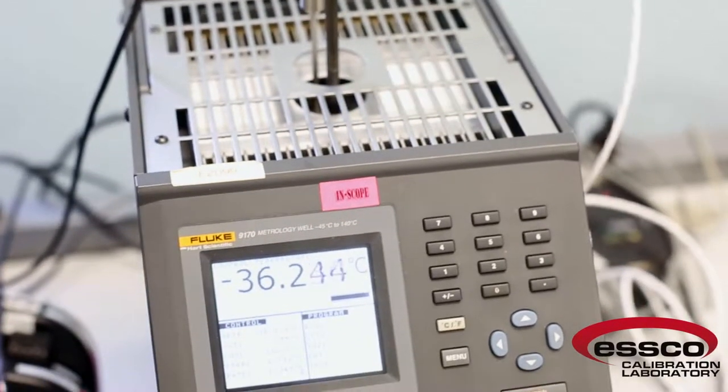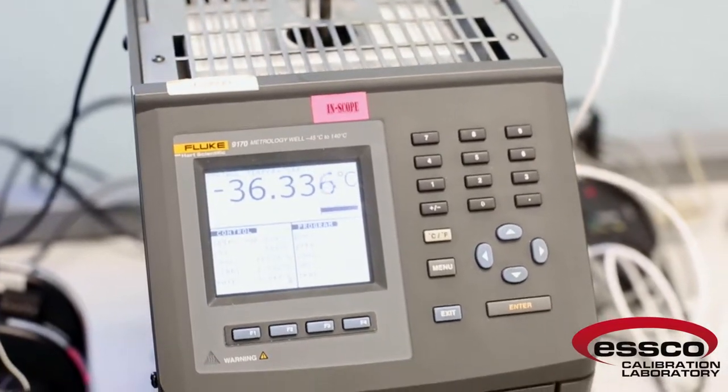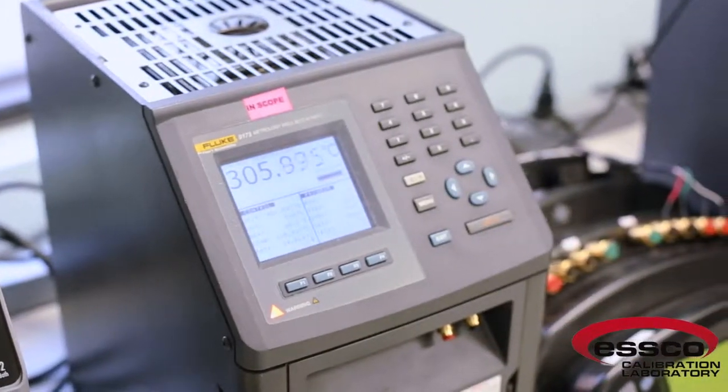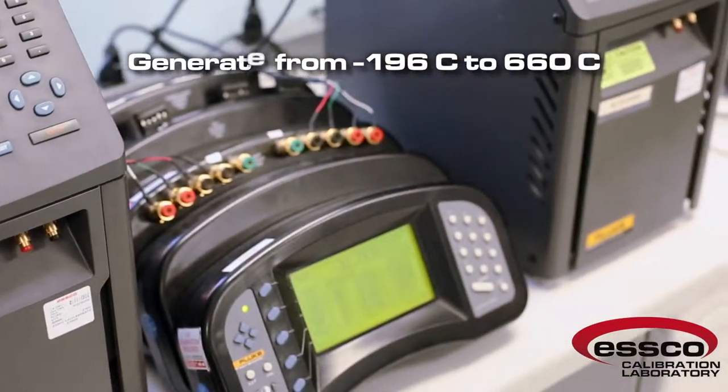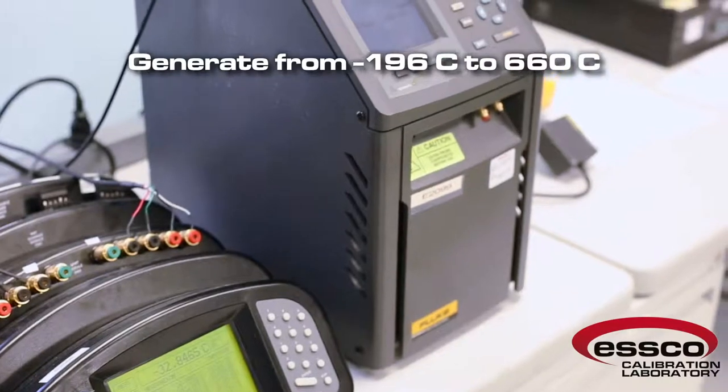At Tesco, we can calibrate RTDs, PRTs, and calibration wells with a range from minus 196 to 660 degrees C. That's similar to the temperature fluctuations on the planet Mercury.